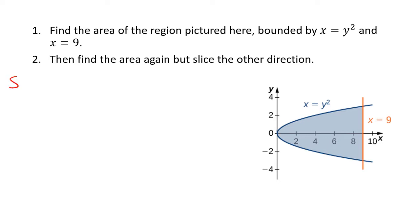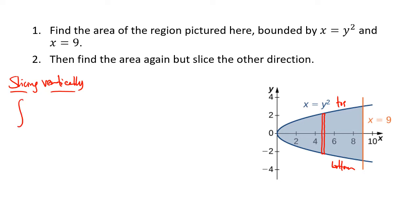When we slice vertically, we're thinking about a typical vertical rectangle. It's got a skinny delta x width, and the top and the bottom of that rectangle define the function that we're going to be integrating. The top function and the bottom function are both my parabola x equals y squared. When we're slicing vertically, we're integrating with respect to x, so the general format is the top function minus the bottom function, integrated with respect to x.